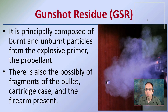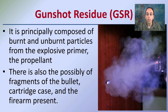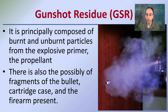Gunshot residue is principally composed of burnt and unburnt particles from the explosive primer and the propellant. There's also the possibility of fragments of the bullet, cartridge case, and the firearm being present. So it's not just the propellant smoke we see — there could also be some cartridge case material and actual bullet components. These are other things to be mindful of when evaluating a scene for gunshot residue.